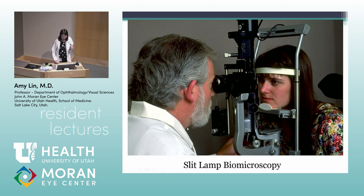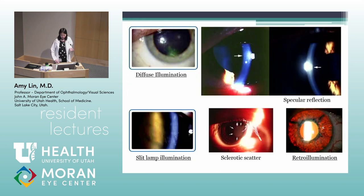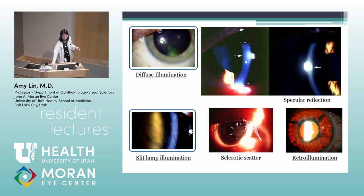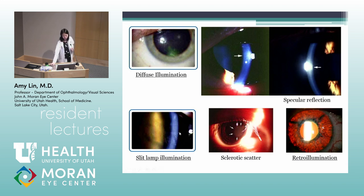Switching gears to slit lamp exam — when you first start looking at an eye, begin with a lower magnification, not super intense light, with a broad beam of diffuse illumination to get a broad overview. Then you can move to slit lamp illumination, where you have the beam at a slit and at an angle, allowing you to see depth; you can go to high magnification to identify more subtle findings. Diffuse illumination and slit lamp illumination are by far the most common techniques used in slit lamp examination.